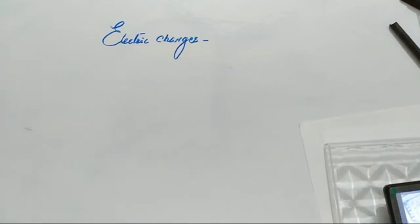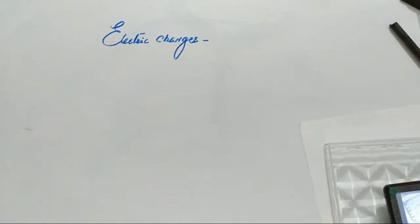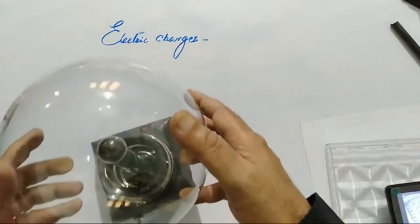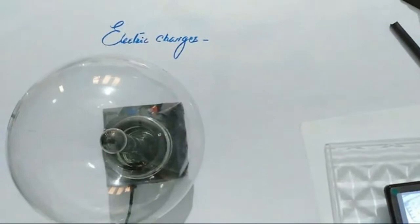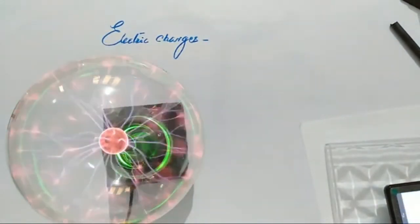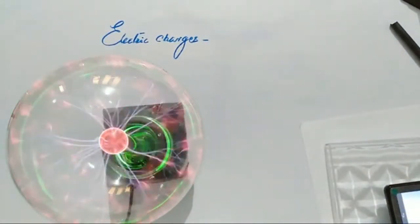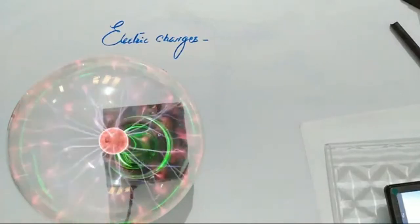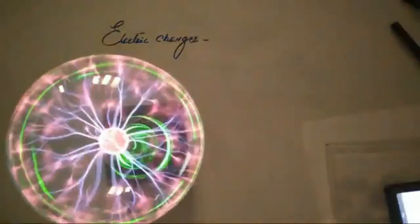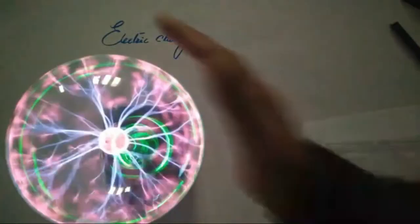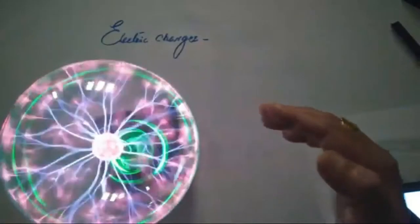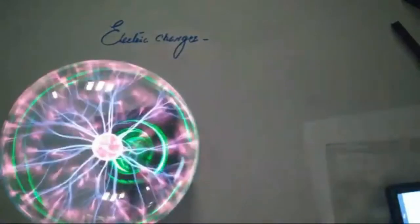The straw was moving, so certainly one force must be acting on it. That force is called the electrostatic force. Now we have to study first about electric charges. Let me show you something. I think you will be able to see this. Now let me switch off the light. If I keep my hand here — which occasion do you see these kinds of things?